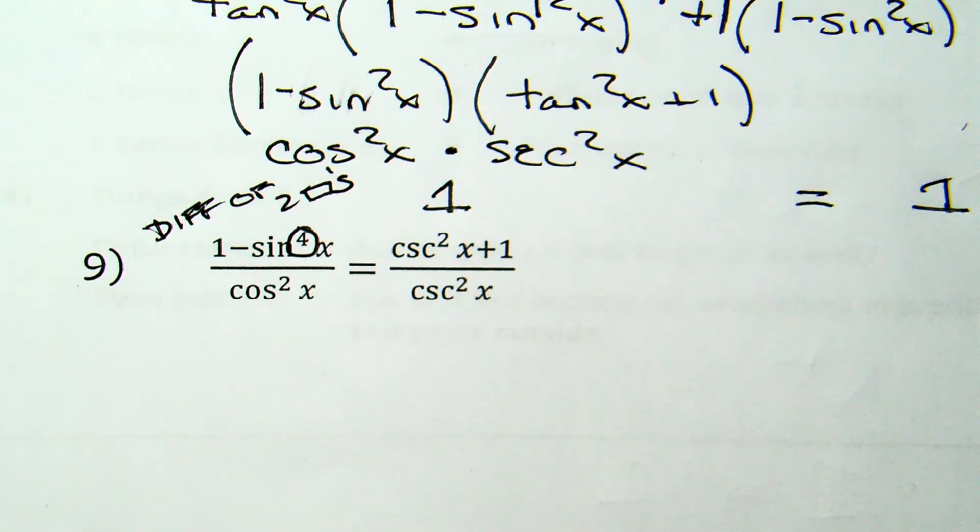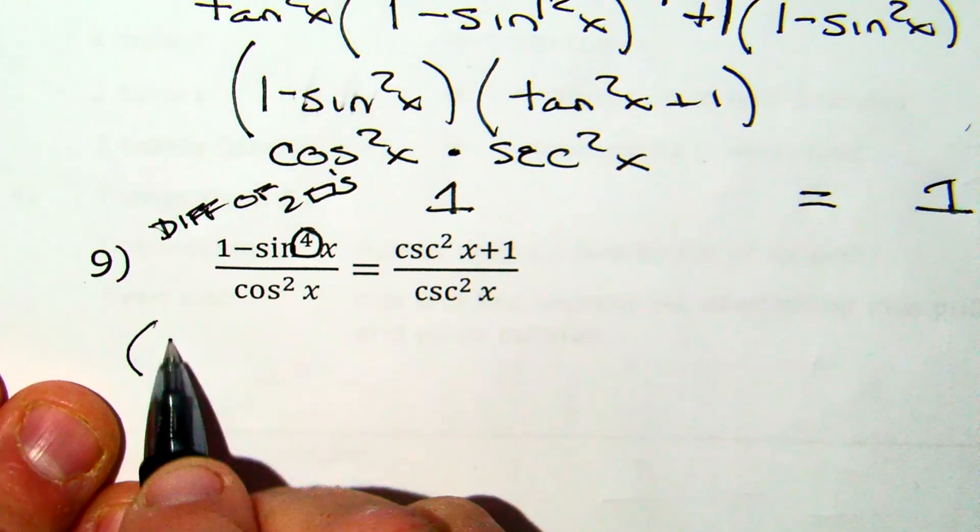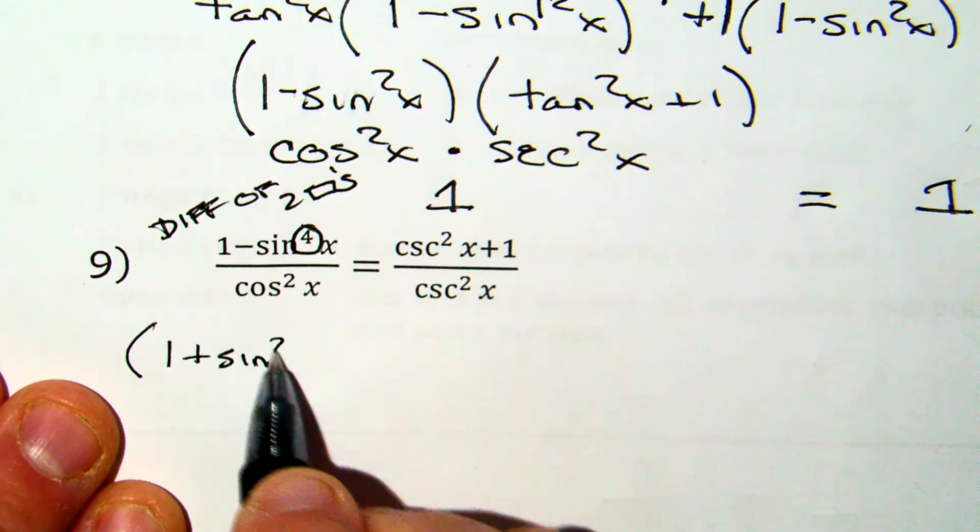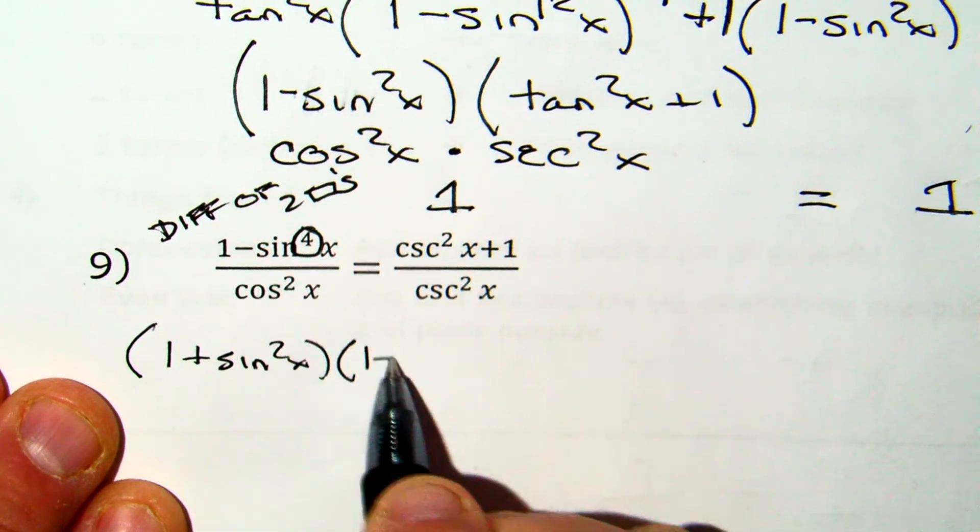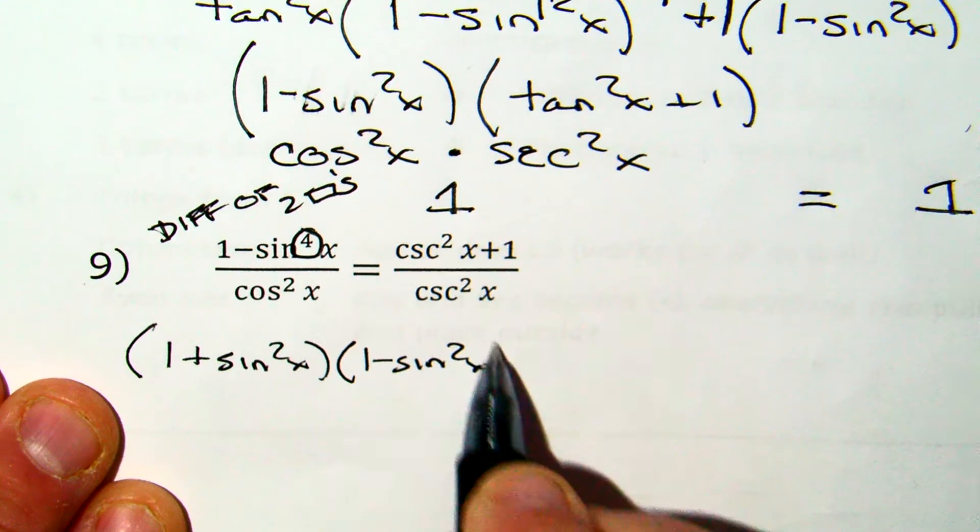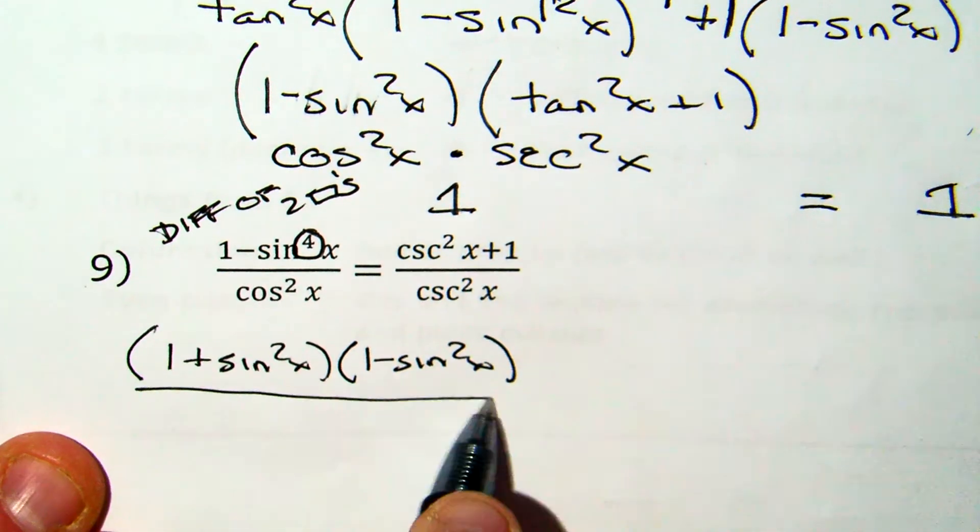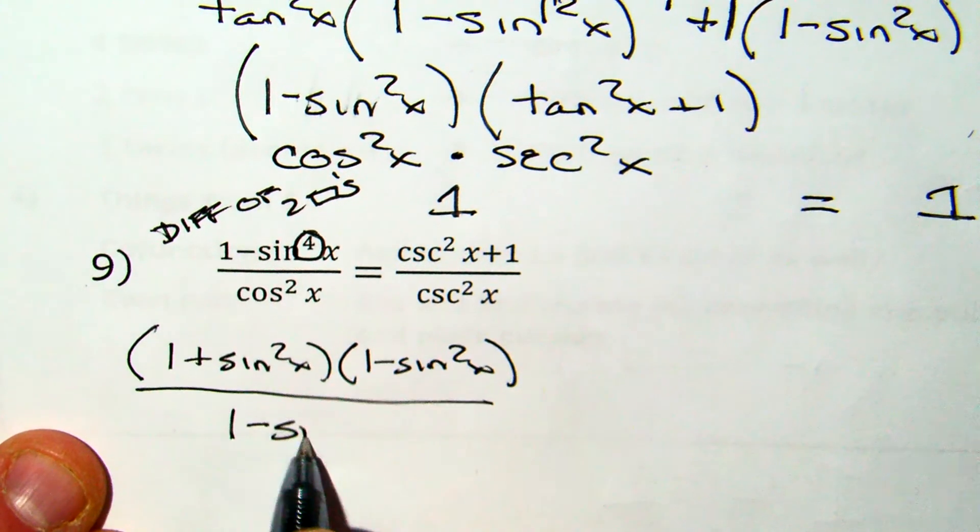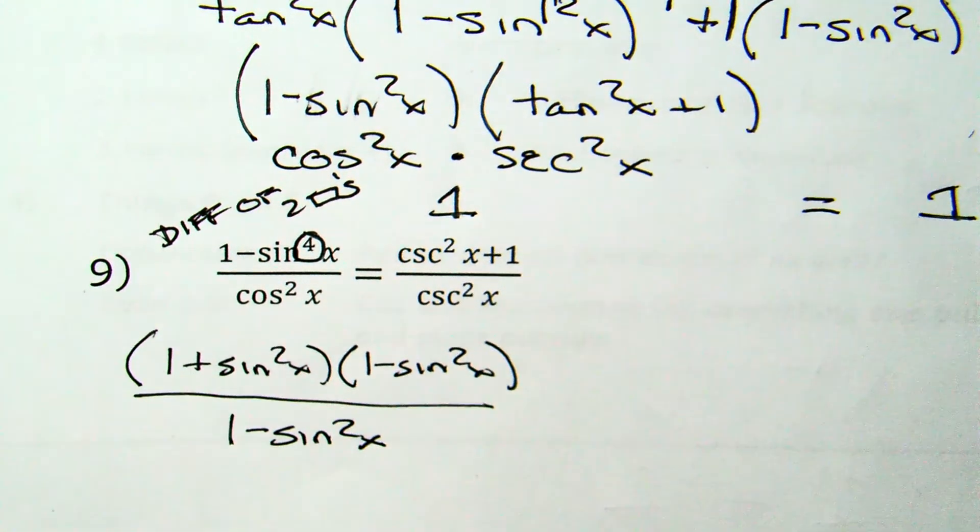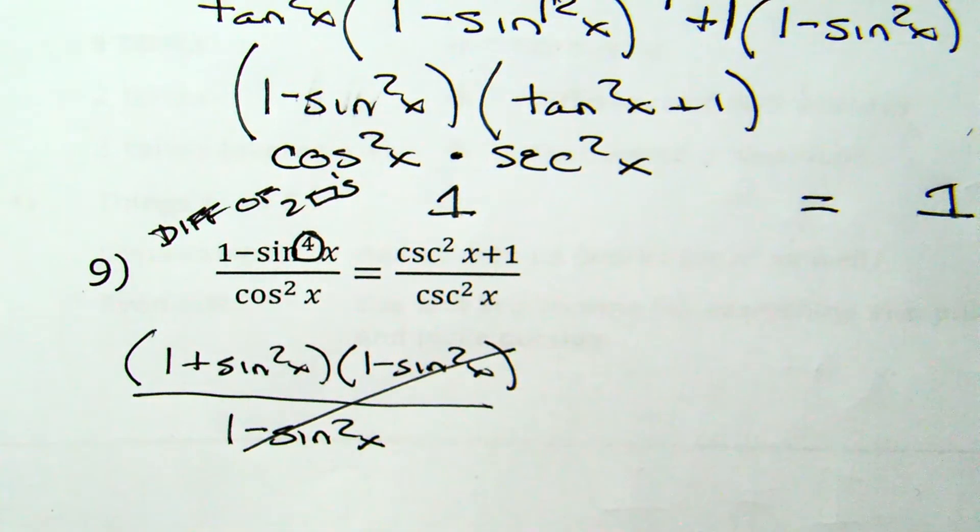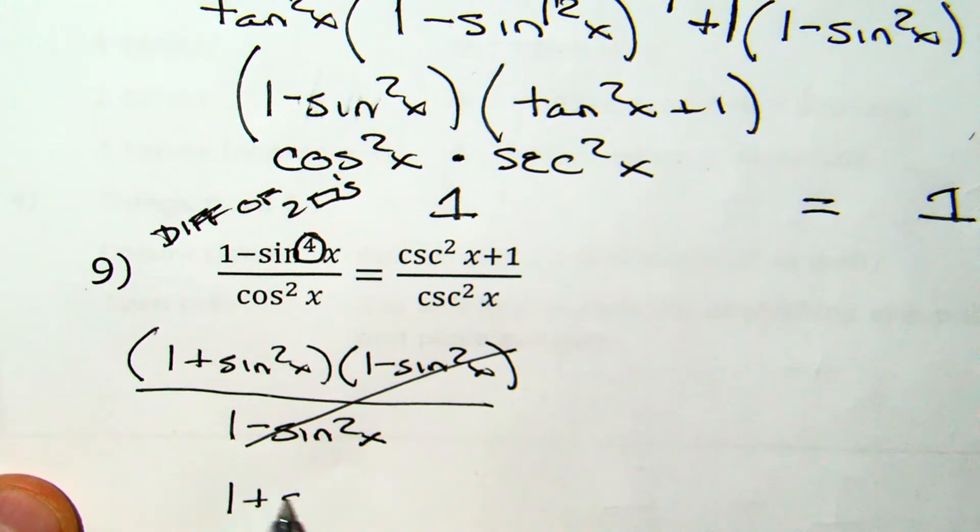That is the difference of two squares. That's going to factor into (1 + sin²x)(1 - sin²x). Cosine squared x is 1 - sin²x. What do the 1 - sin²x terms do to each other? Cancel out, and you're left on the left-hand side with 1 + sin²x.